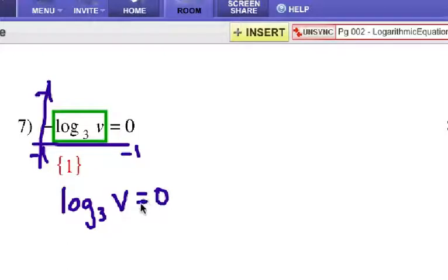Now we just need to convert it into an exponential equation. So three is your base, zero is your exponent. Three to the zero power equals v. And anything to the zero power is what? One. That's right. So v has to be one.